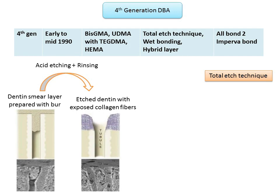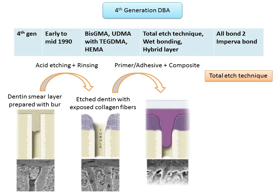The next step is the application of primer and adhesive followed by composite. The primer is made up of hydrophilic monomers dissolved in organic solvents; because they are volatile in nature, the solvent displaces water from the collagen network, allowing the primer to penetrate into the exposed dentinal tubules. The final step is the application of adhesive resin, which co-polymerizes with the primed dentine and also with the composite resin applied over it. This brings us to the concept of hybrid layer formation, introduced by Dr. Nobuo Nakabayashi in 1982.